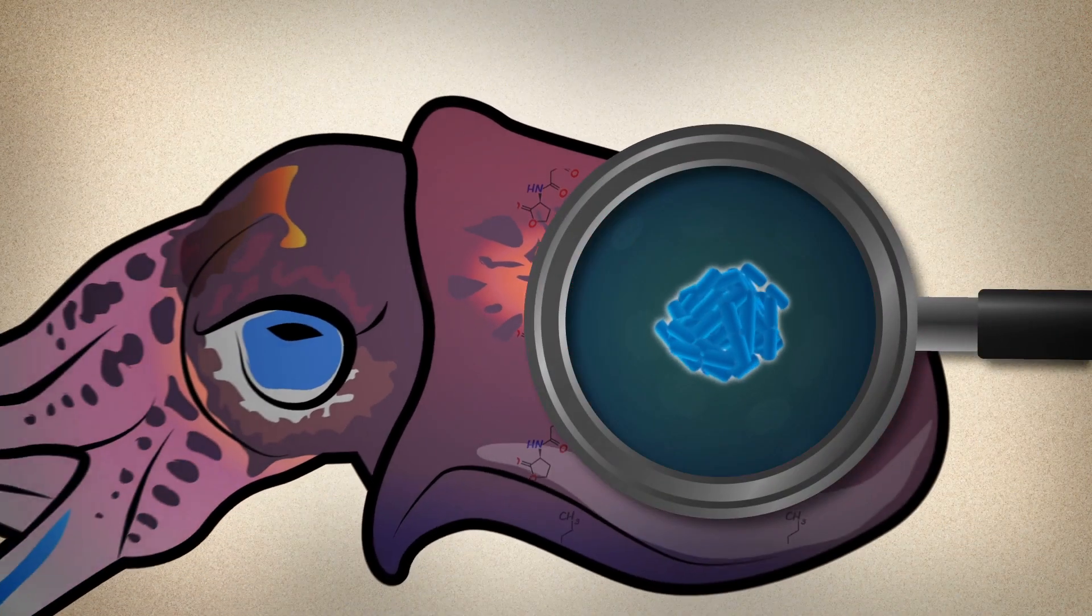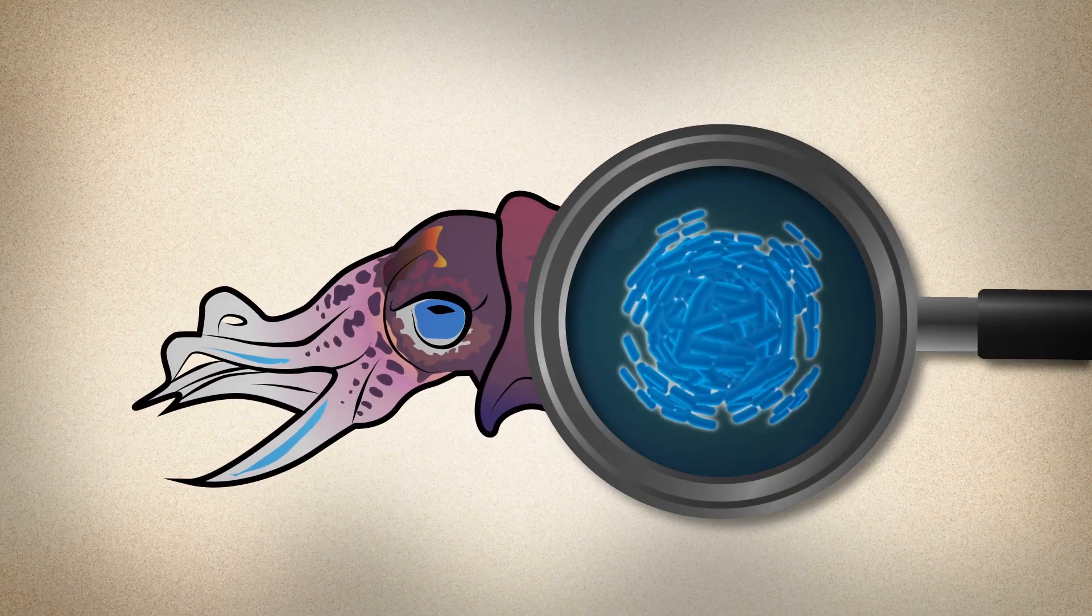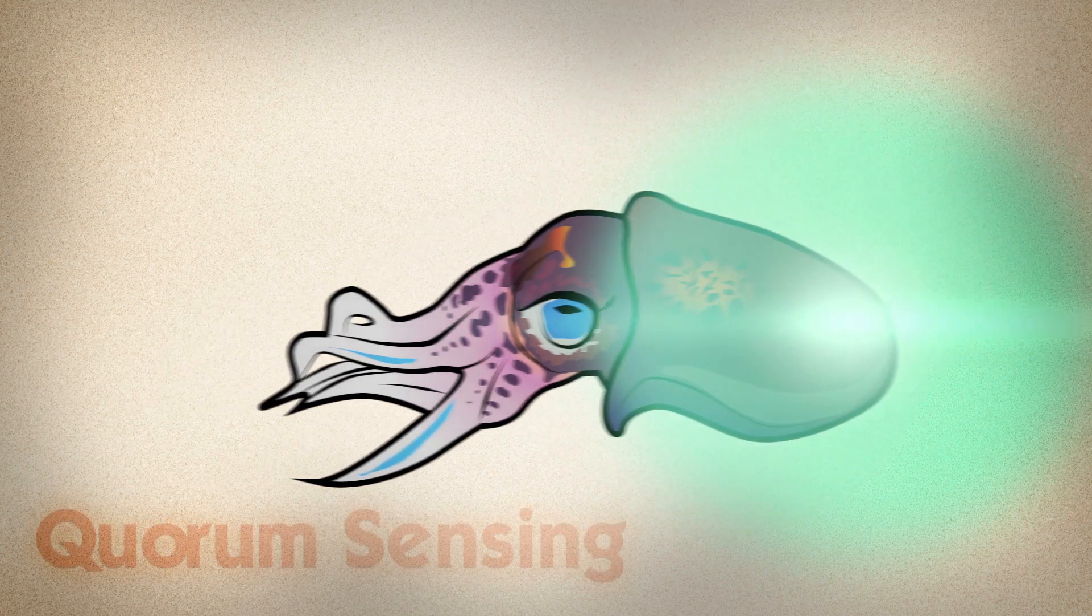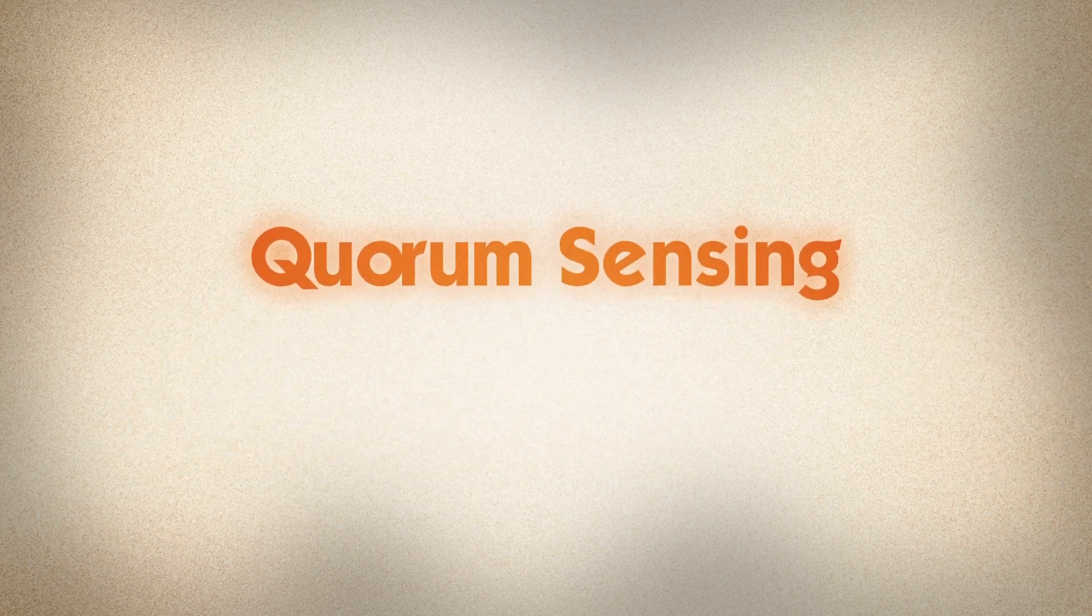Once the auto-inducer reaches a critical concentration, it triggers the bacteria to switch on the genes for producing light. This chemical form of communication is called quorum sensing.